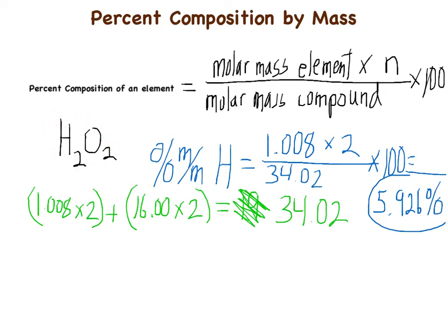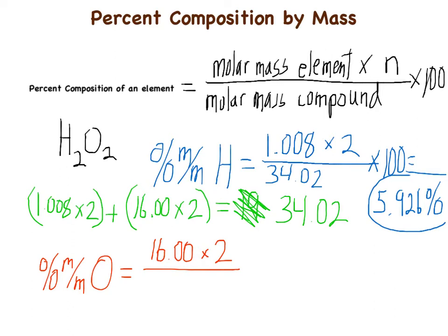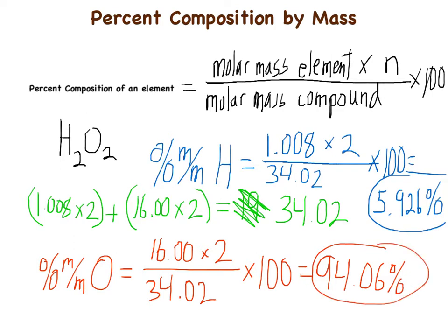Now let's do it for oxygen. The percent by mass of oxygen equals the molar mass of oxygen, which is 16.00, times the number of moles in the compound — which is 2 — divided by the molar mass 34.02, times 100. That equals 94.06%.